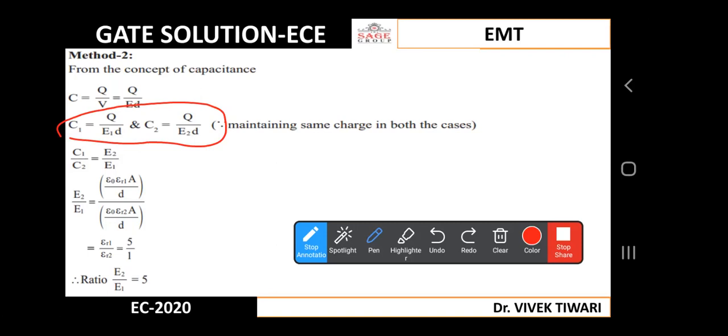From here we can write C1 by C2 equals E2 by E1. After that, we will put value of C1 that is ε0 εr1 A by d. We will finally get E2 upon E1 equals εr1 divided by εr2. From here we can put the value of εr1 that is 5 and value of εr2 that is 1. So we get the ratio E2 divided by E1 equals 5.